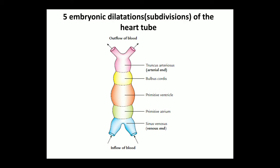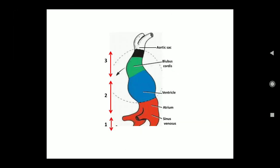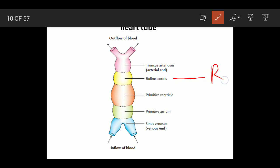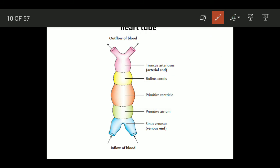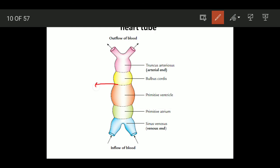The proximal one-third of the bulbus cordis will mainly form the right ventricle. The middle part — the conus — will form the outflow part of the right and left ventricles. Truncus arteriosus will divide by a spiral septum to give rise to the ascending aorta and pulmonary trunk. The junction between the bulbus cordis and primitive ventricle is called the bulboventricular sulcus or bulboventricular groove. The proximal part of the bulbus cordis forms the right ventricle mainly and the primitive ventricle mainly forms the left ventricle.